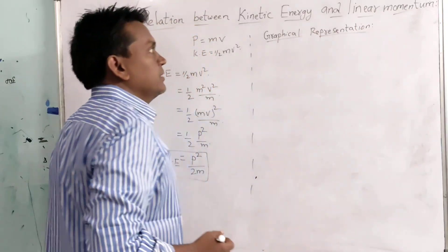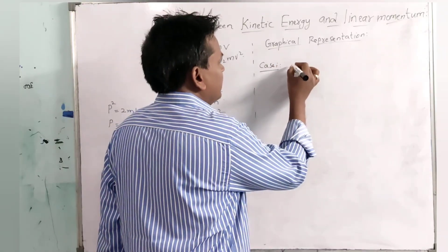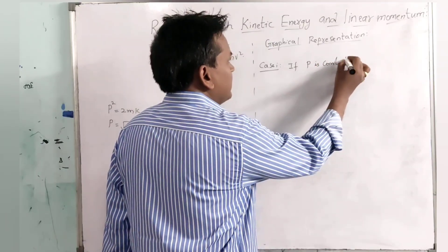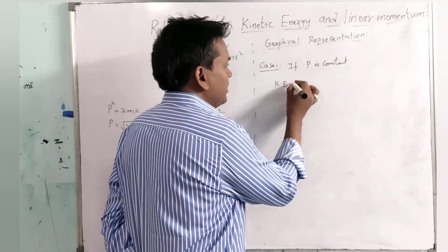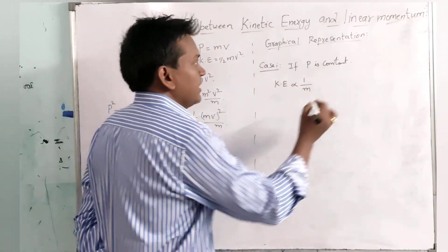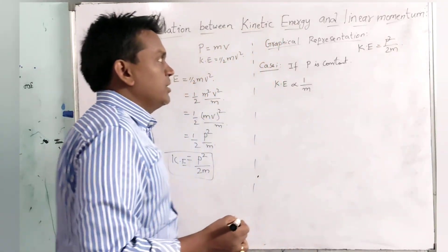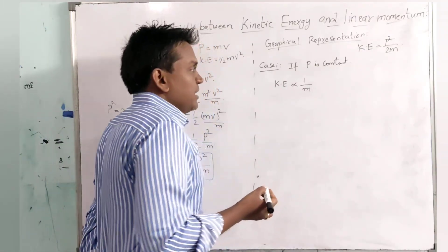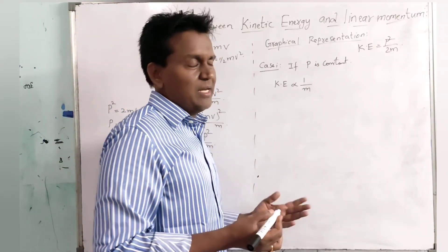Graphical representation. Case 1: let us consider if P, that is linear momentum, is constant. Then kinetic energy will be inversely proportional to mass. From the relation KE equals P squared by 2m, as momentum is constant, kinetic energy is inversely proportional to mass. That means if mass increases, kinetic energy will decrease, and if mass decreases, kinetic energy will increase.